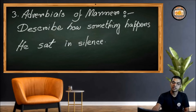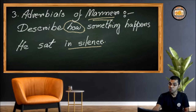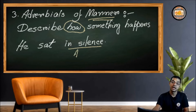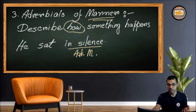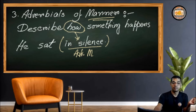The third type is adverbials of manner. When it's manner, it obviously answers how — how something happens. For example: 'He sat in silence.' How did he sit? The answer is 'in silence.' So it's used as an adverb, but 'in silence' is a prepositional phrase. That means this is an adverbial, and we consider it as adverbials of manner. Just find the proper phrase and then ask how. If you get the answer, it's an adverbial of manner.